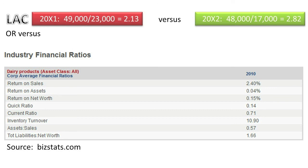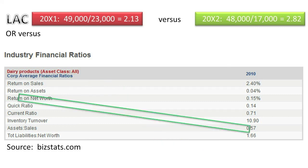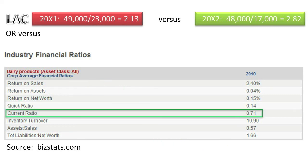For example, the bizstats.com website provides an industry financial ratios table for the U.S. dairy products industry. If LAC were in the dairy products industry and this were a table for 20x2, we would recognize that LAC is much more liquid than the industry average, because LAC's current ratio is 2.82 whereas the industry average is only 0.71. If you want to learn how to pull up similar industry ratios on your own, please watch the following short video.